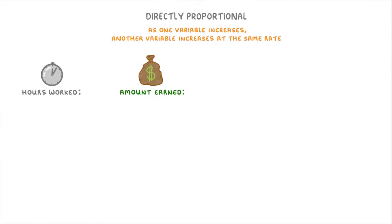The term directly proportional means that as one variable increases, another variable increases at the same rate. For example, imagine that we were comparing hours worked to amount earned.